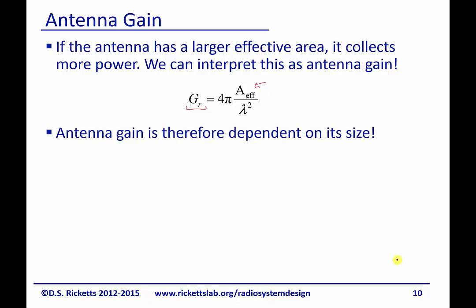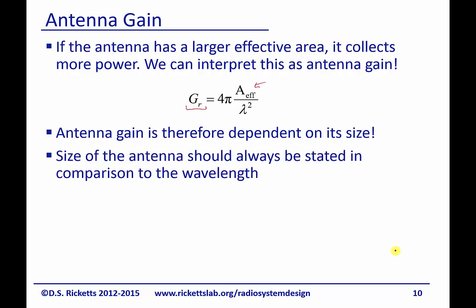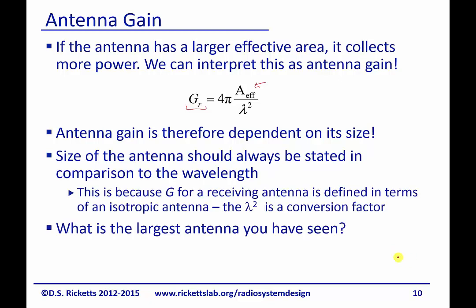So as we said, it's pretty clear the antenna gain for the receiver is dependent upon its size. And the size of the antenna should always be stated in comparison to the wavelength. And this is because G for receiving antenna is defined in terms of an isotropic receiving antenna. Well, what does that mean? That means G always tells us how good does this antenna work compared to an isotropic one. And if you go through the mathematics, this lambda over 2 is how we go as a conversion from an area to a gain when we compare this to an isotropic antenna. So that's just where this lambda over 2 comes. But I think physically you can see pretty clearly that the area is pretty intuitive.